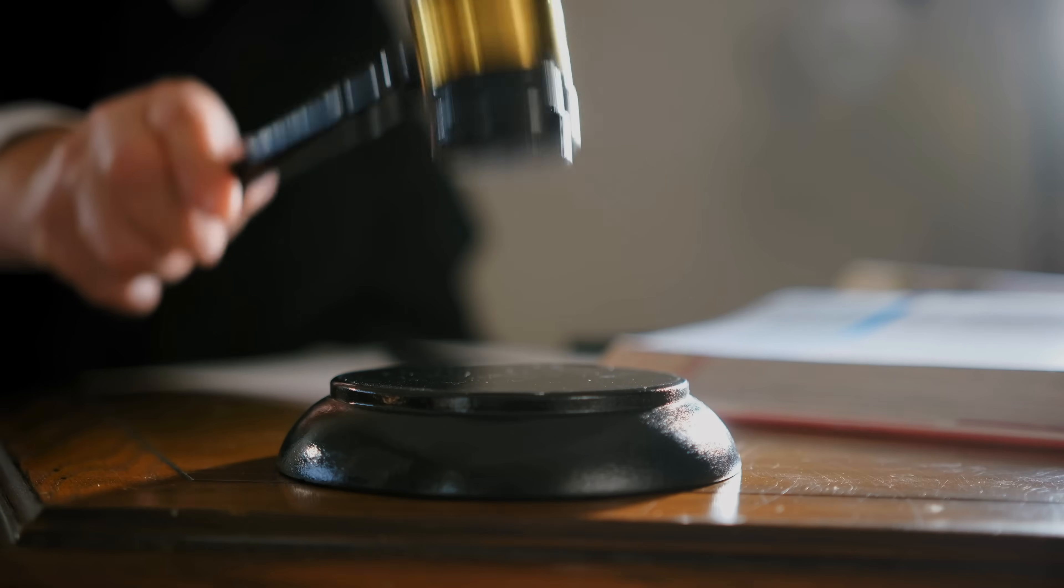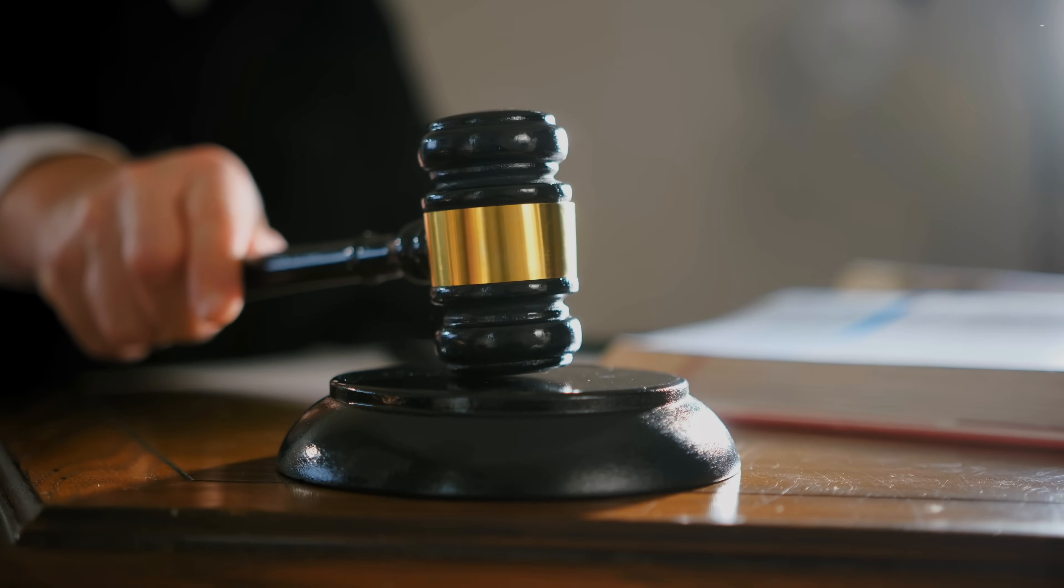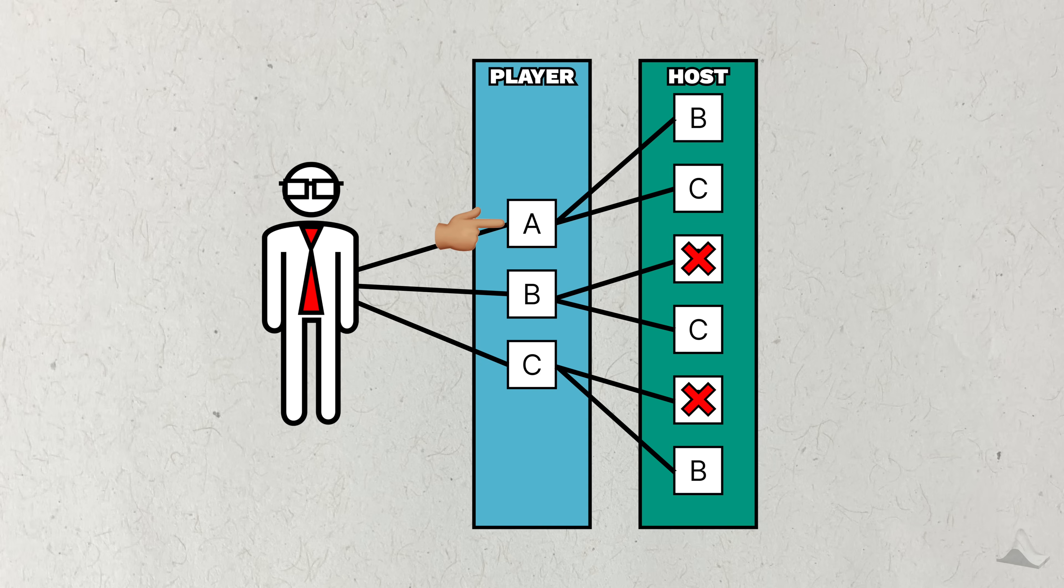That's great for the player, but not great for the host's job security. But if the player picks A, then the host can choose either B or C, since neither have the prize behind them. The host has no reason to prefer one over the other, so they'll pick a door at random with one-half probability.